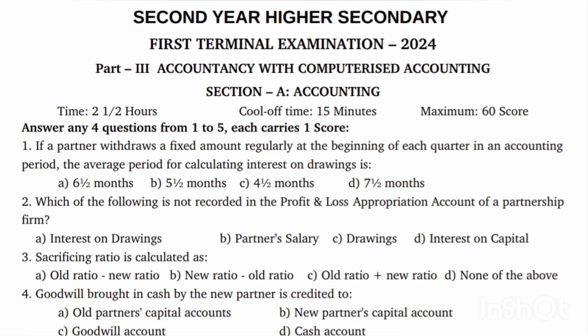Fourth question: Goodwill bought in cash by the new partner is credited to — where is it? Goodwill bought in cash — goodwill account is credited to the old partner's capital account. You have to choose the old partner's capital account.